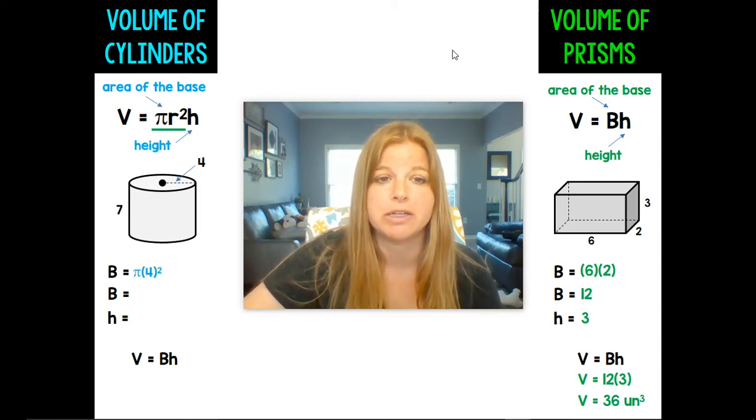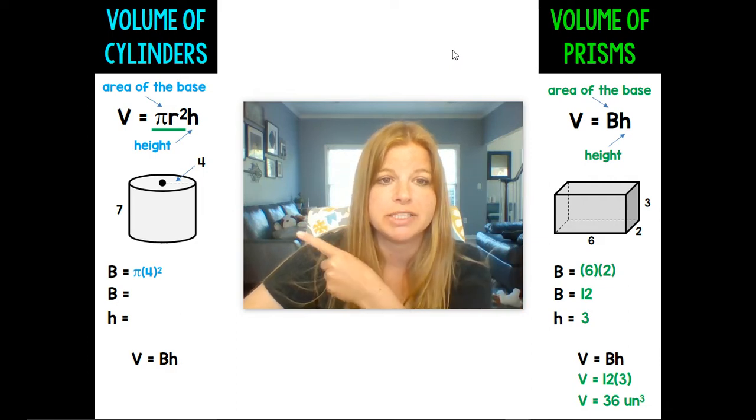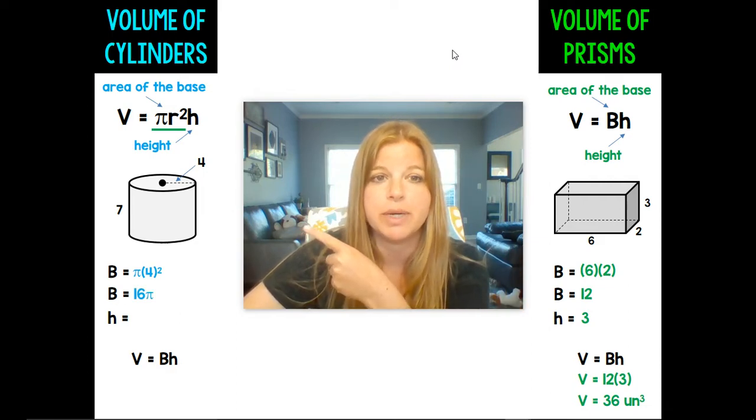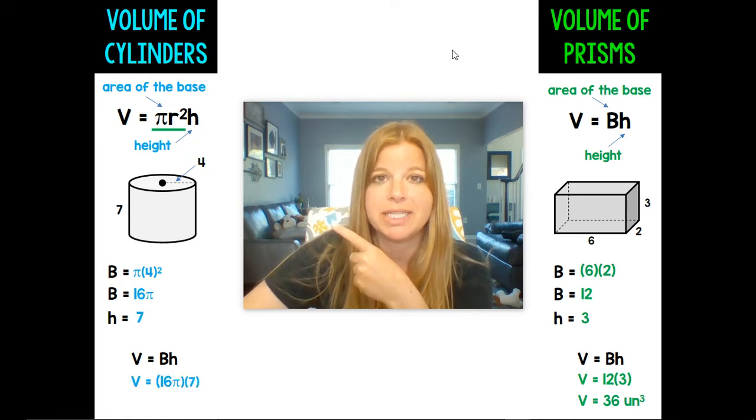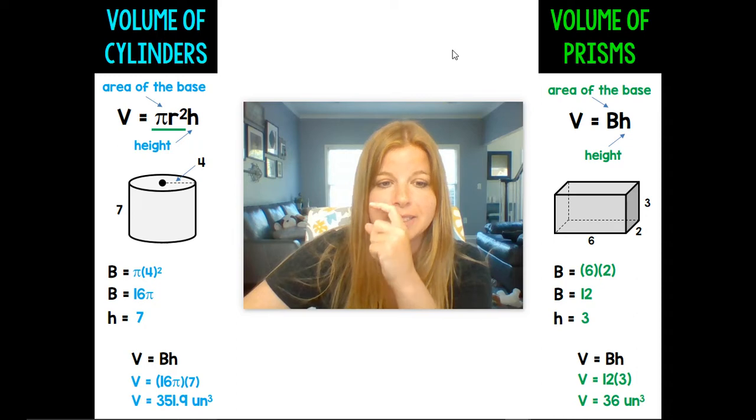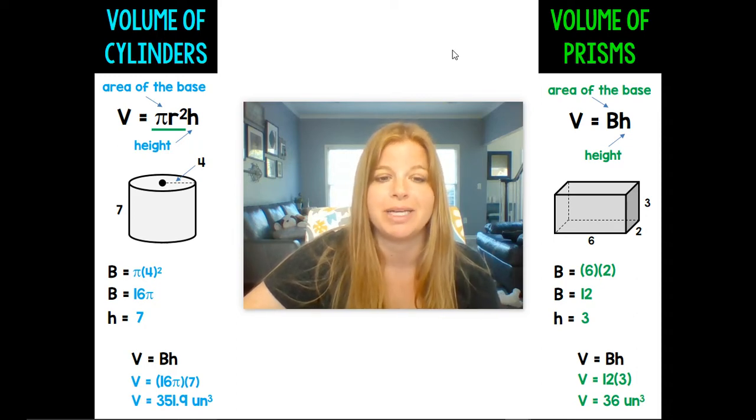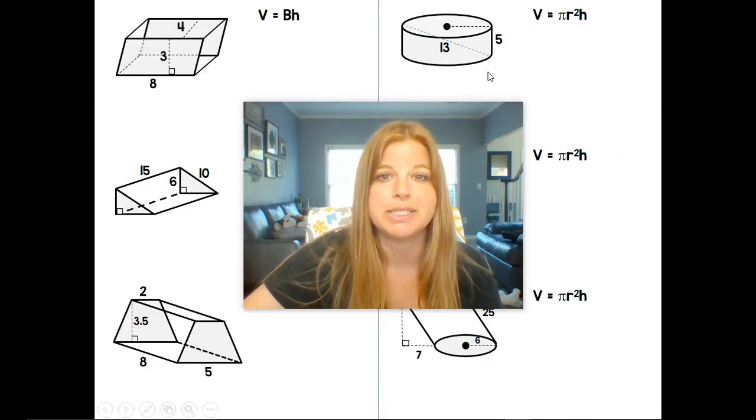Area formula for a circle is pi r squared. So if my radius there is 4, it's simply pi 4 squared, which becomes 16 pi. My height is 7. And if I multiply those together, put in my calculator, round to the 10th place, I get 351.9 units cubed. Pretty simple. Okay.